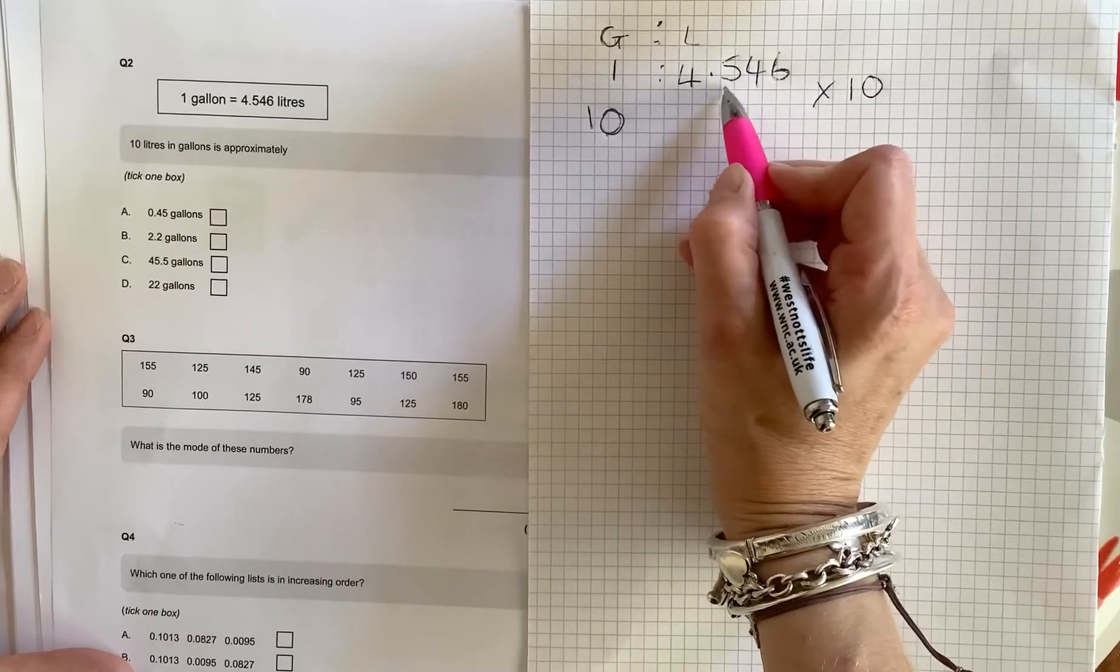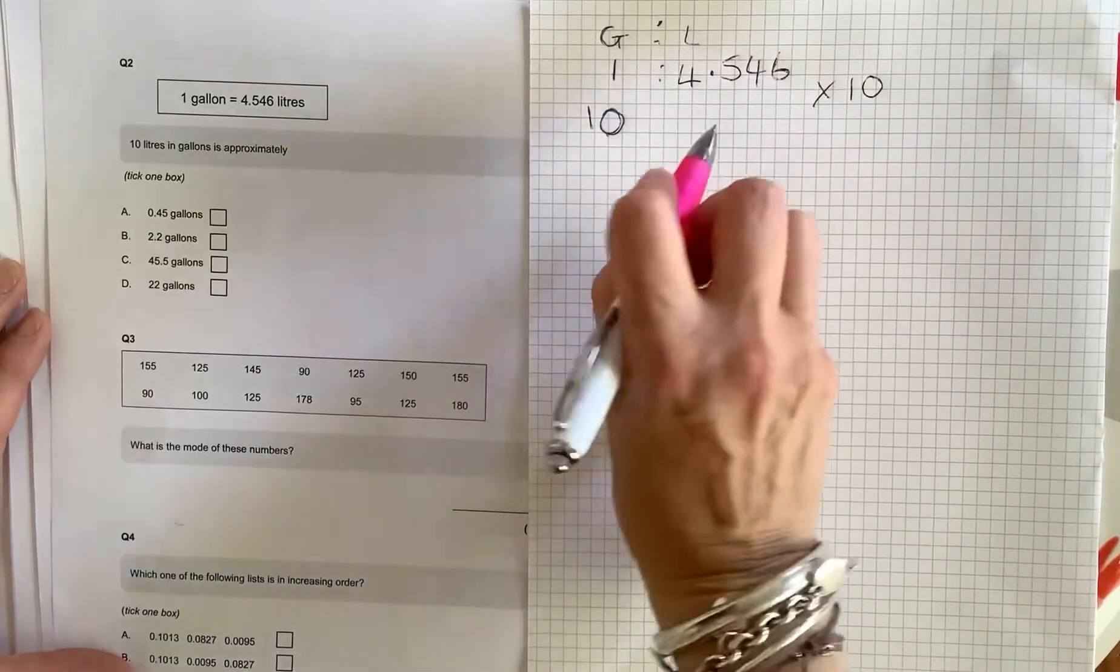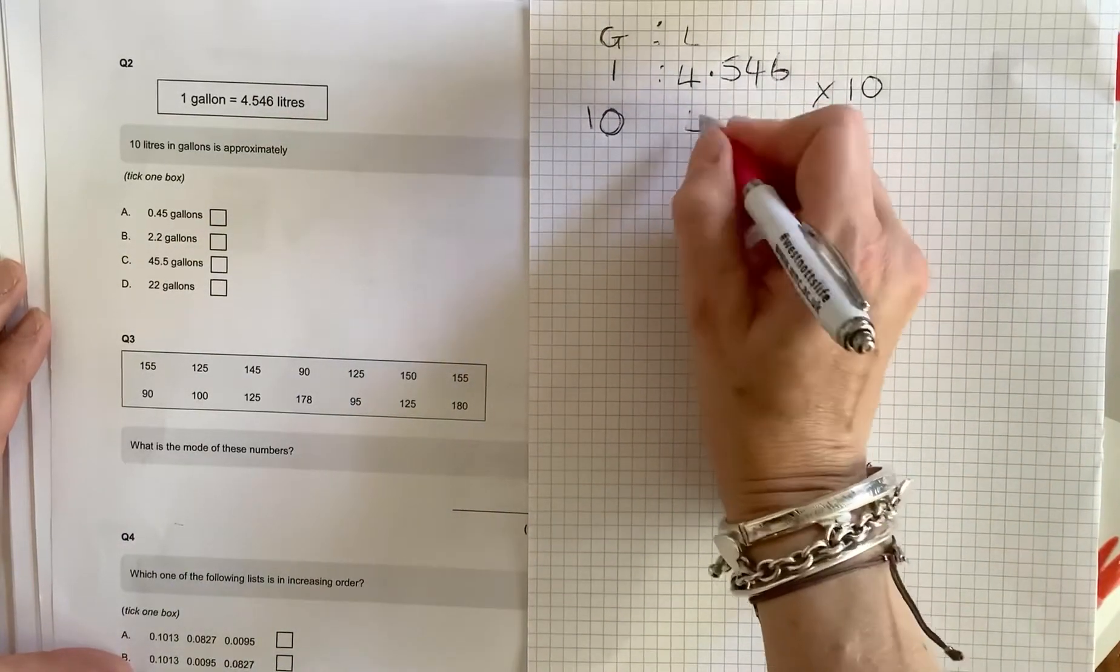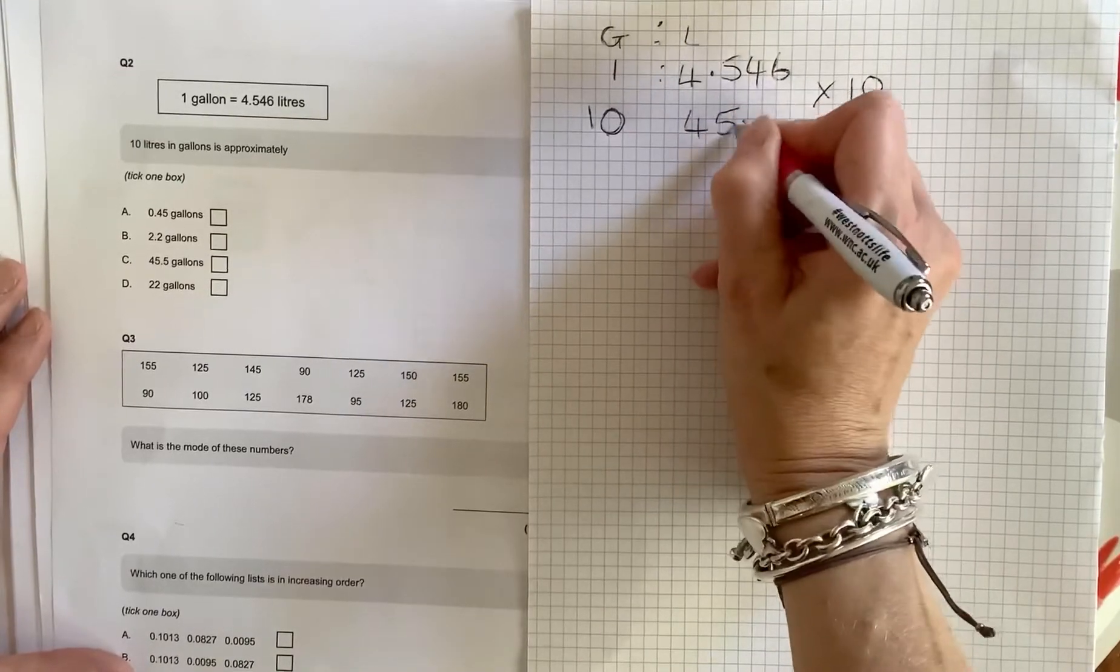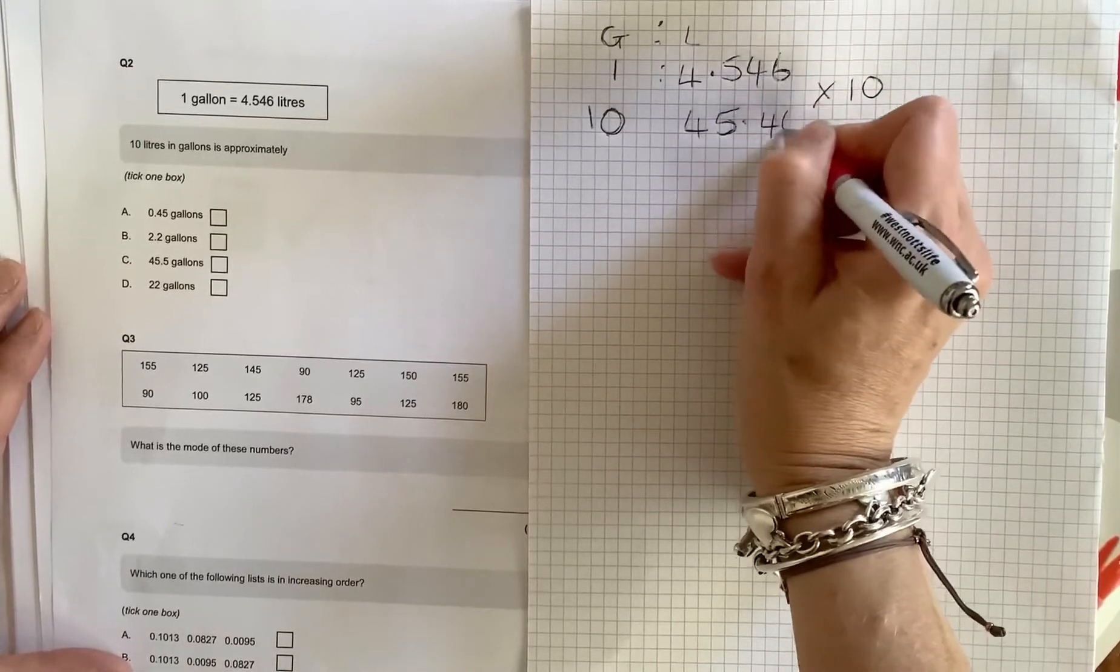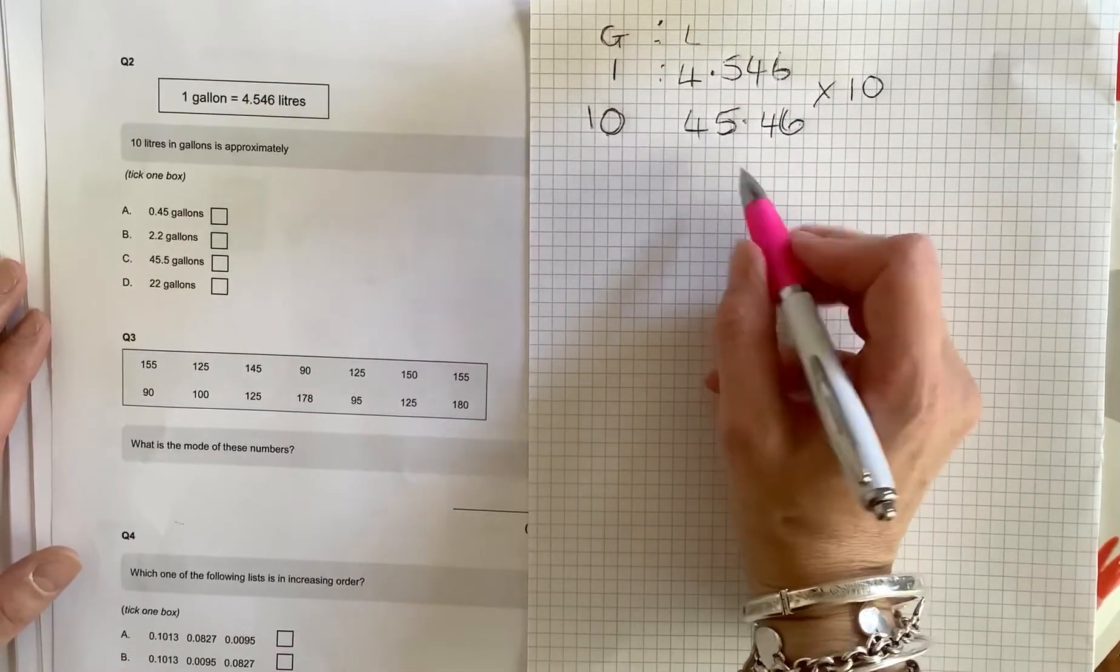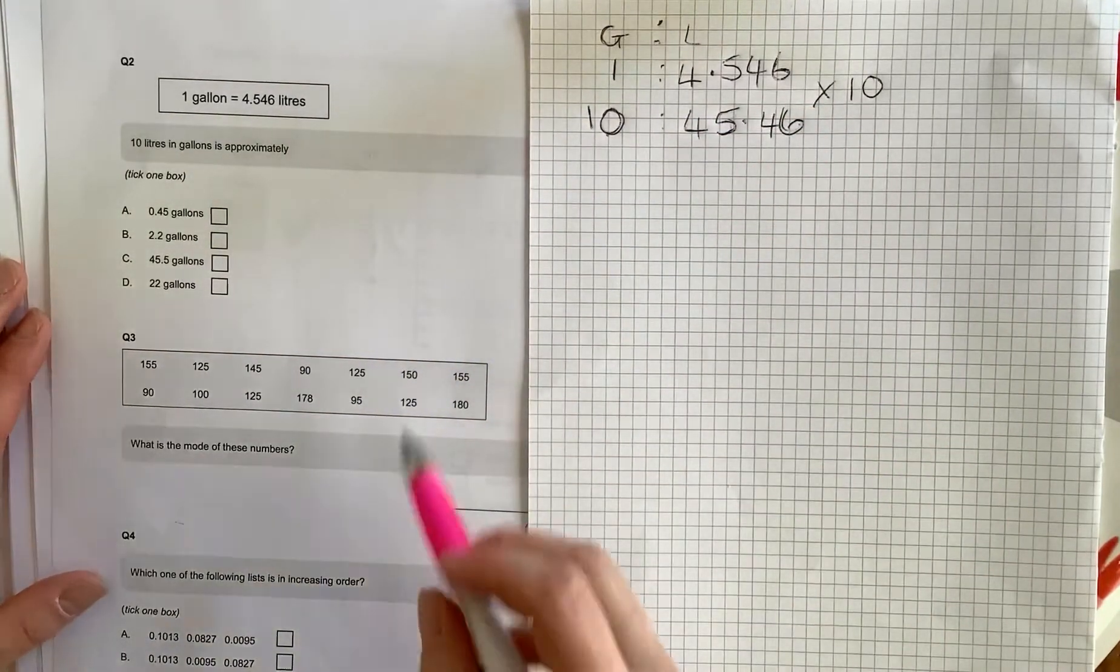So a simple way to multiply any number that's got a decimal point in it by 10 is to move the decimal point to the right. Okay, so we're going to end up with 45 point... go over it again... 45.46. Let's read the question again. Tick one box.